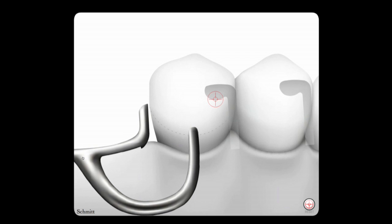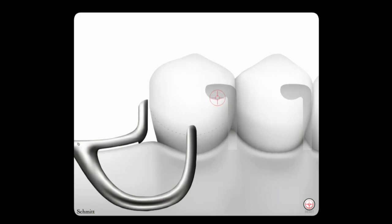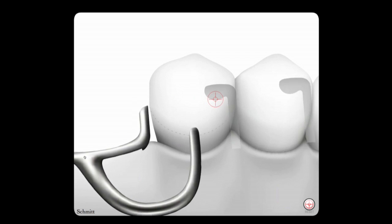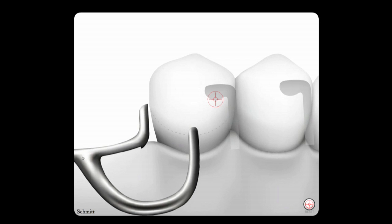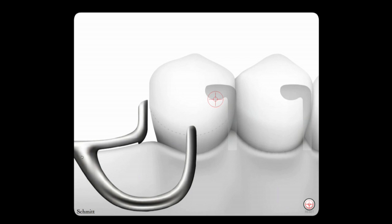Note two things during the initial movements using the mesial rest. Number one, the indirect retainer on the first premolar rises only slightly. Number two, the tip of the eye bar moves downward into more undercut, essentially disengaging from the abutment. A retentive arm that doesn't touch the tooth can't cause stress.